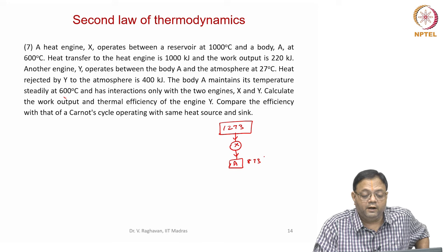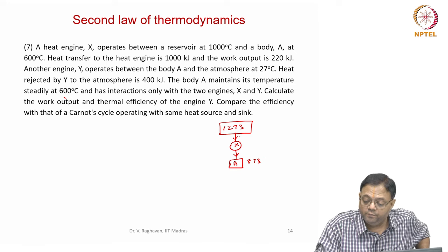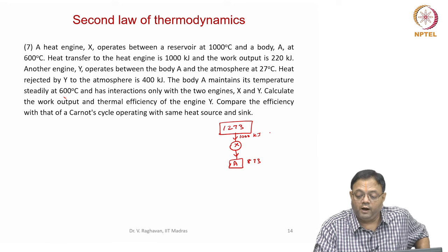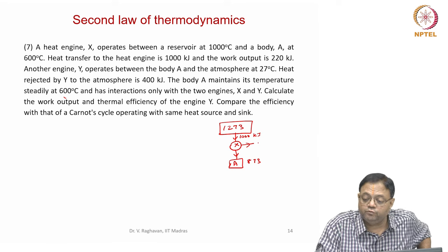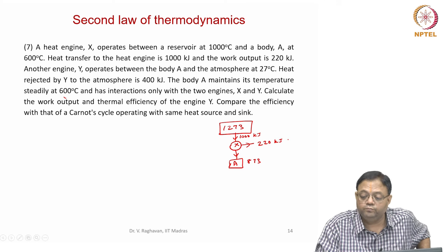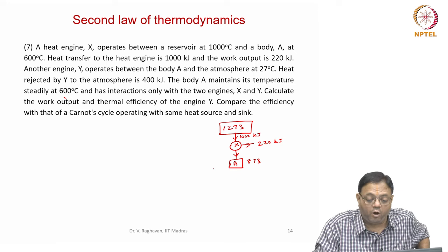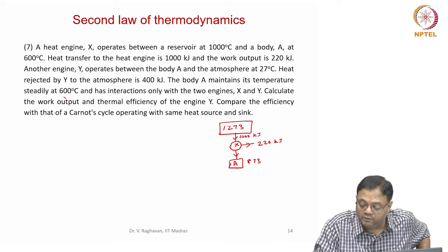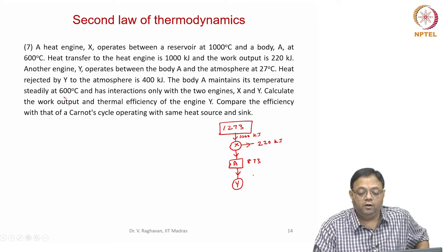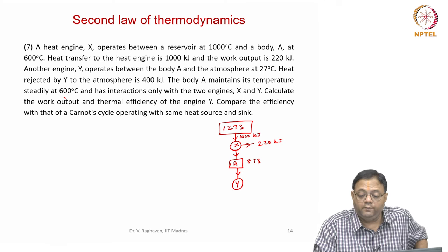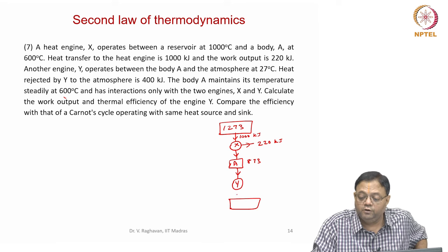Heat transfer to engine X is 1000 kilojoules and the work output is 220 kilojoules. Another engine Y operates between body A and the atmosphere at 27 degrees centigrade, that is 300 Kelvin.